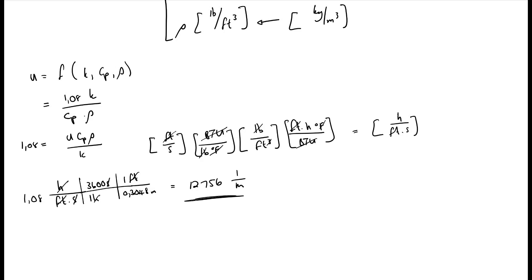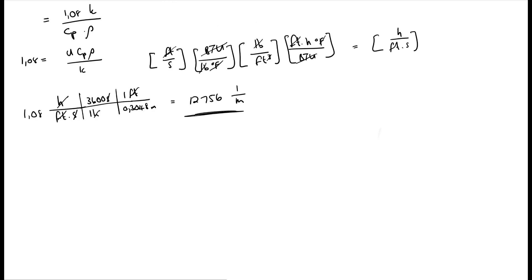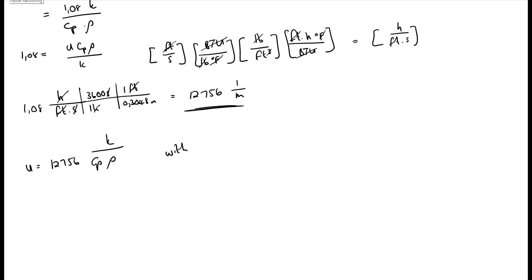With this now being the new constant and its units. And this our equation becomes worth U in meters per second, K in watt per meter Kelvin, CP in kilojoule per kilogram Kelvin, and rho in kilograms per cubic meters. And there we have it, a new equation in which we can put our variables directly into the SI unit and calculate velocity in the SI unit.